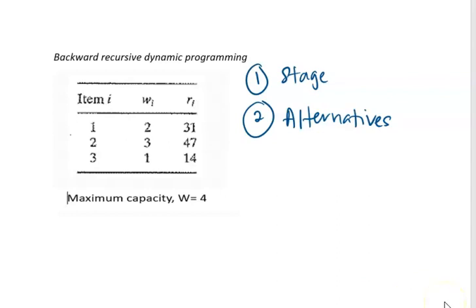And the third element is the state. This state refers to the total weight assigned to a particular stage. The function we use in our calculation: since we are going to maximize the return, our function f_i(x_i) is the maximum return for stage i, given state x_i.